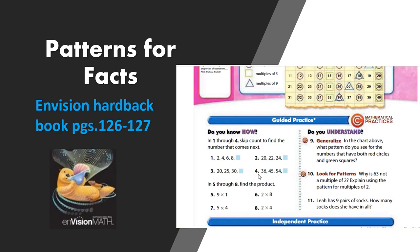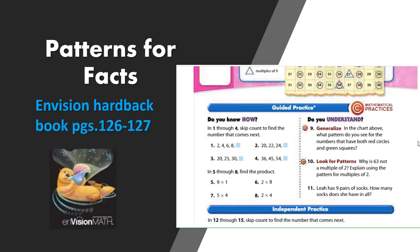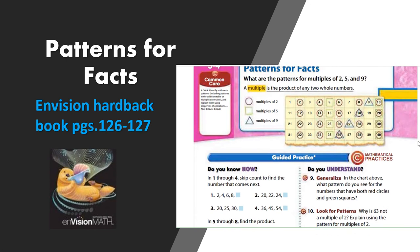You will notice that in number nine, it says to use the chart above. And it asks you to look for what pattern you see for the numbers that have both red circles and green circles. So if you think about your circles, your circles were multiples of two and your green squares were multiples of five. So what pattern do you notice? What numbers do you see that are multiples of two and multiples of five? What do you notice about those?